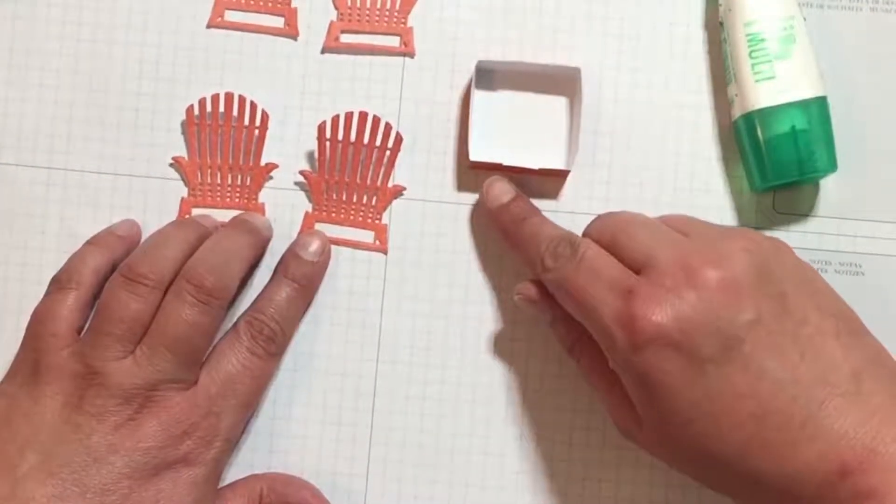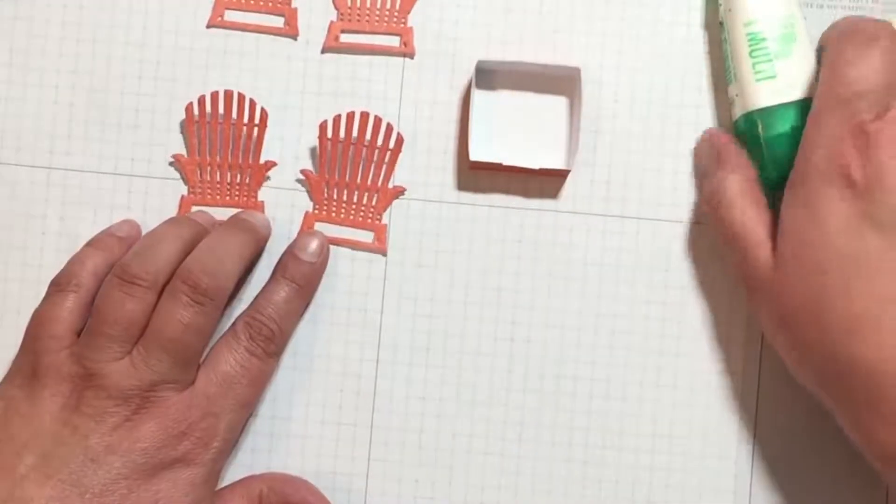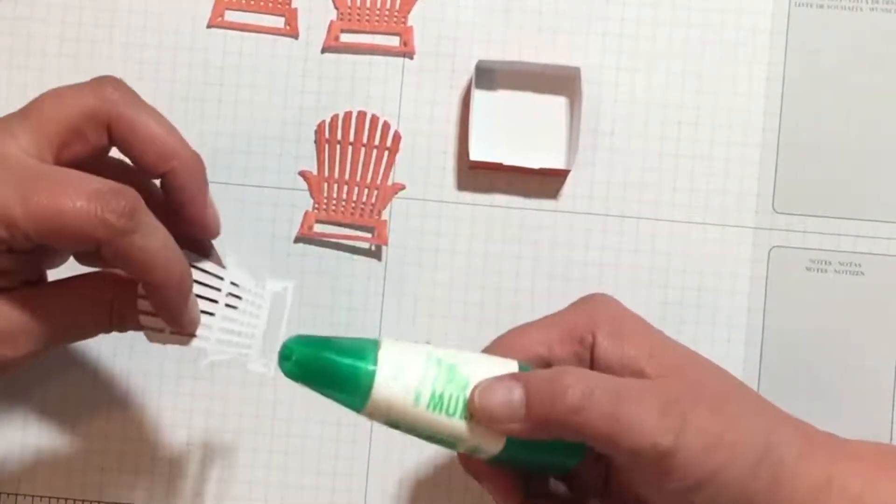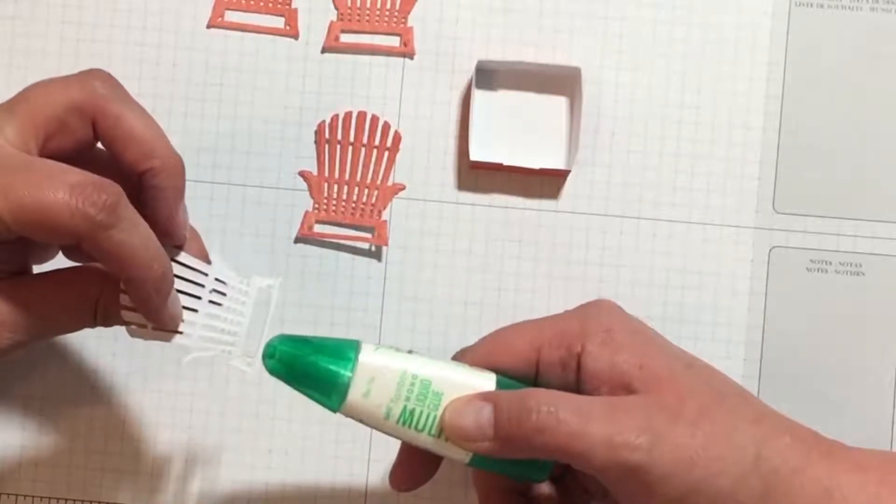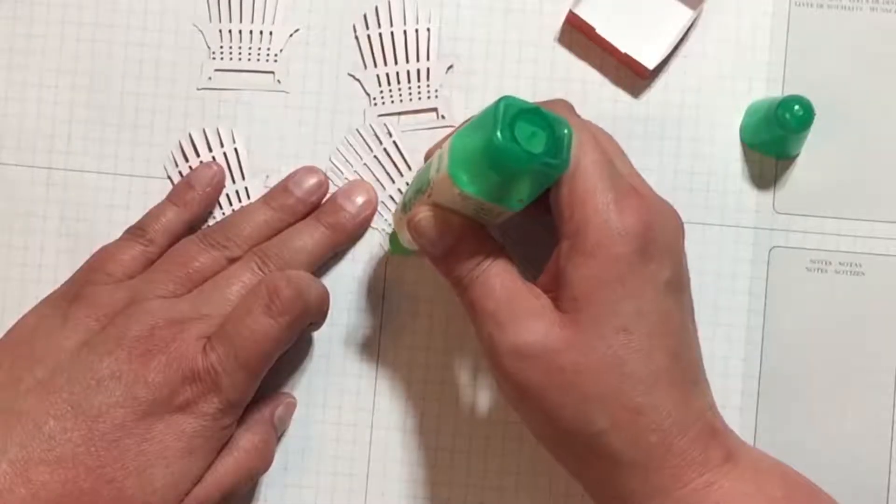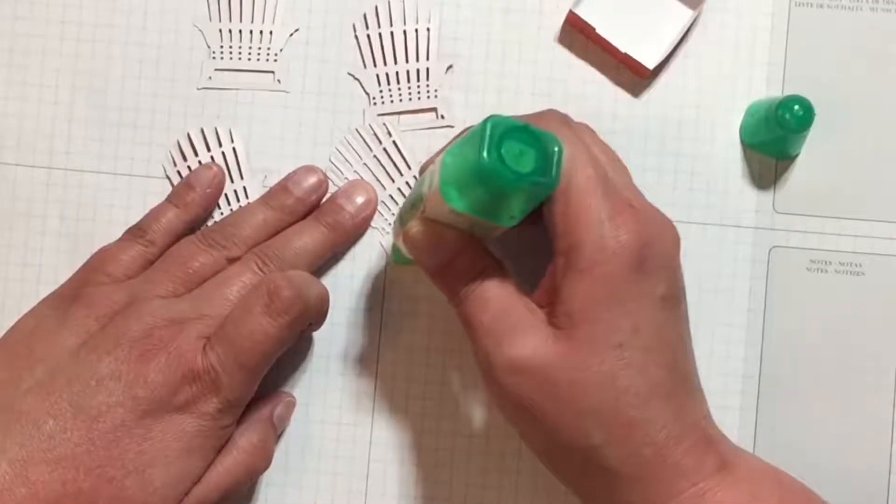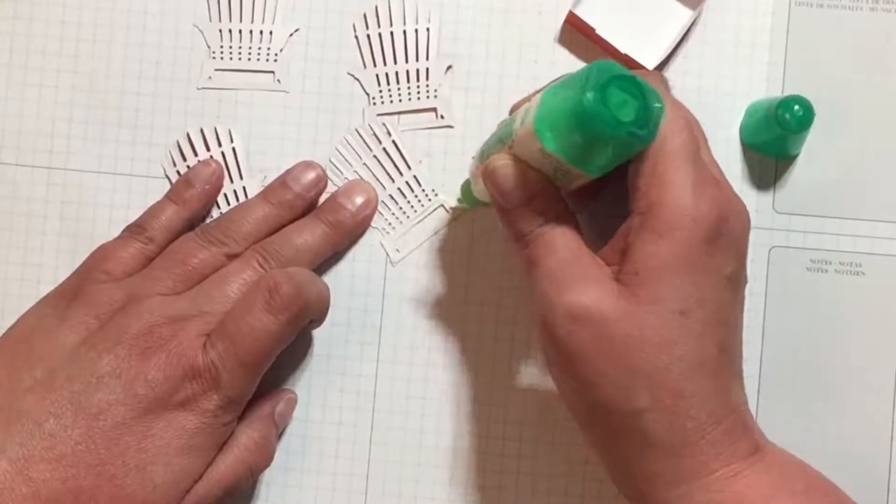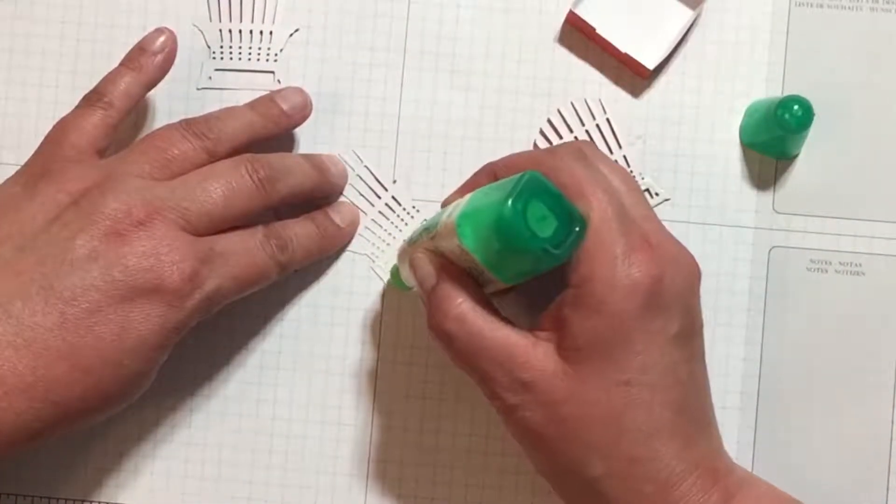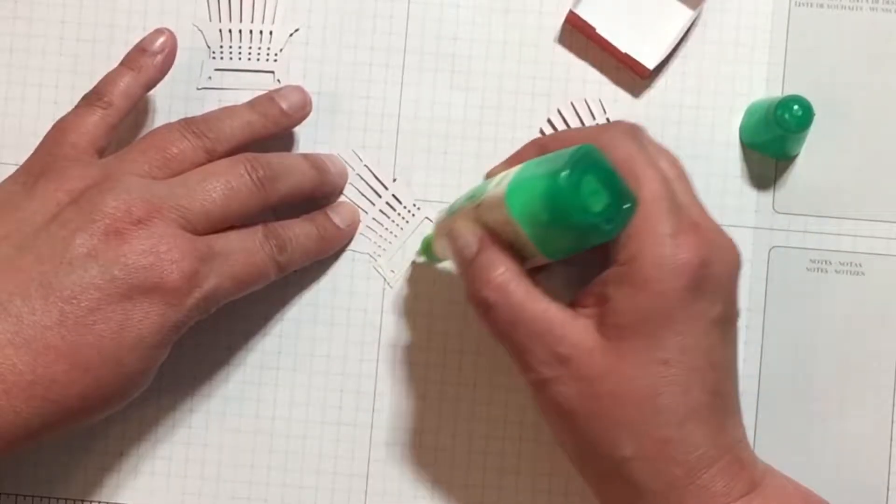Now you'll want to attach one die cut lawn chair to each side of the box. I recommend using liquid glue for this, like the Tombow multi-purpose glue that Stampin' Up offers, since the lawn chair bases are so small. Most dry adhesives are just too thick. This Tombow adhesive dries fast but not super fast, so if you use it you will have enough time to add glue to all four chair pieces before you stick them to your box.